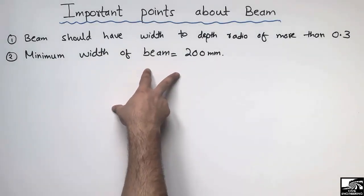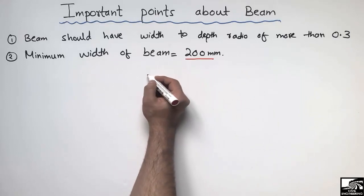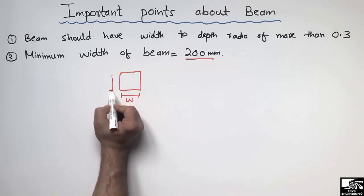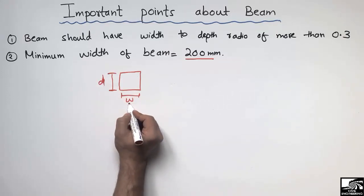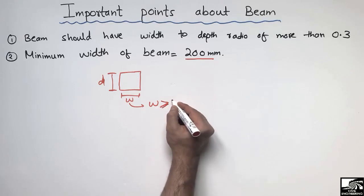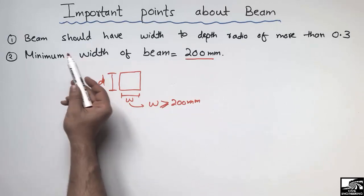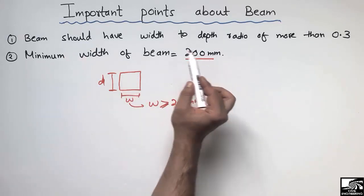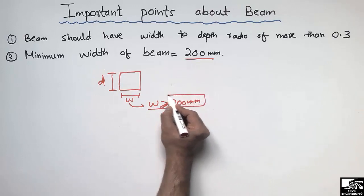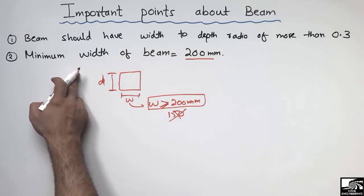The second important point is that when you design a beam, its width should be at least 200mm. Looking at the cross-section of the beam — this is the width and this is the depth — the width should be at least 200mm or greater. It should not be 150mm or 100mm. The minimum width must be 200mm or greater. This is the second restriction on the geometry of the beam cross-section.